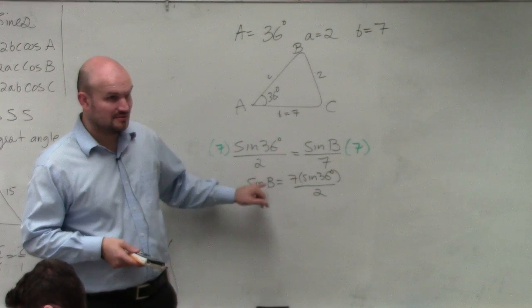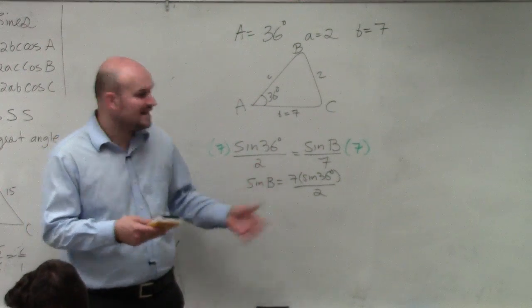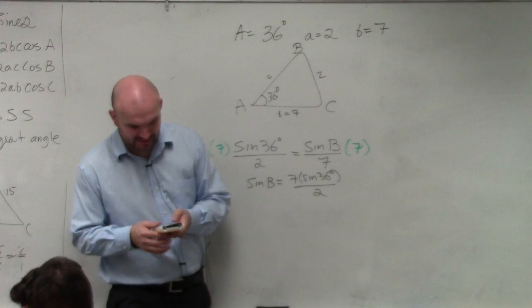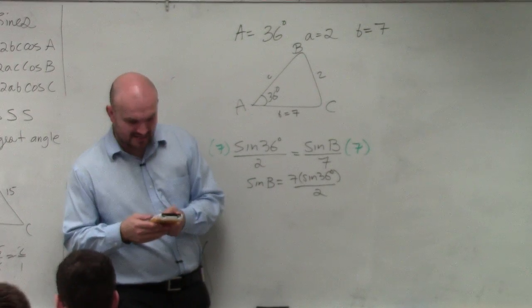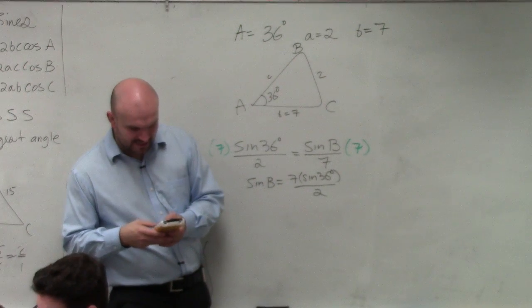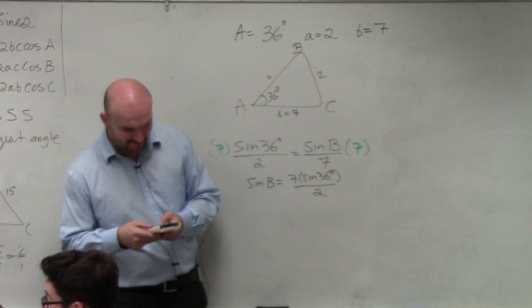So how do we undo sine? You do sine inverse. Now we can solve for this first, and I'll just kind of explain this. So let's do this first. 7 times the sine of 36, close the parentheses, divided by 2.